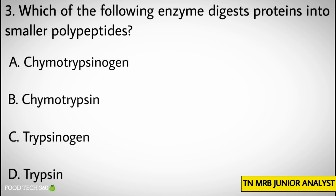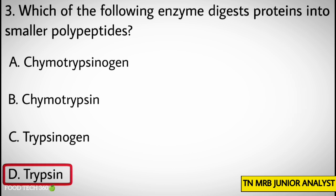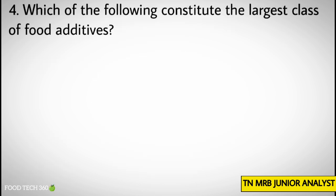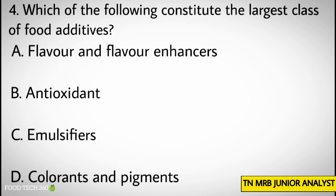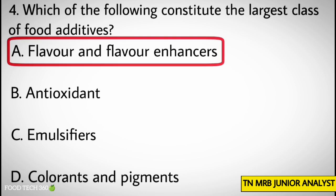...D) Trypsin. Correct answer: D) Trypsin. Question number four: Which of the following constitutes the largest class of food additives? Options: A) Flavors and flavor enhancers, B) Antioxidants, C) Emulsifiers, D) Colorants and pigments. Correct answer: A) Flavors and flavor enhancers.